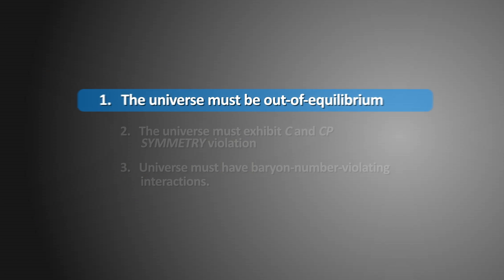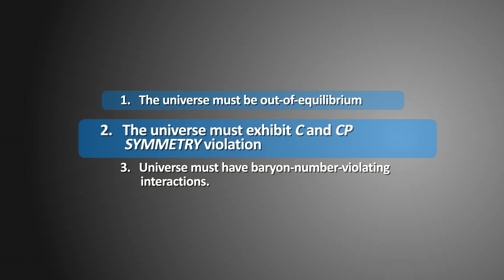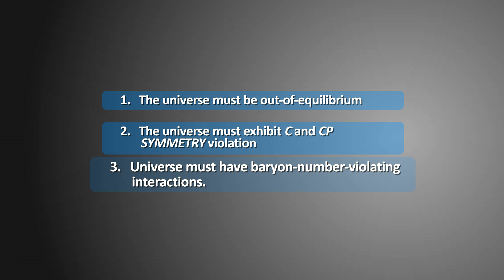So the first condition is met. The second condition is met somewhat. But the third condition is not met from what we observe. So the question remains, what caused the matter-antimatter asymmetry? There are some speculative theories, some more crazy than others.